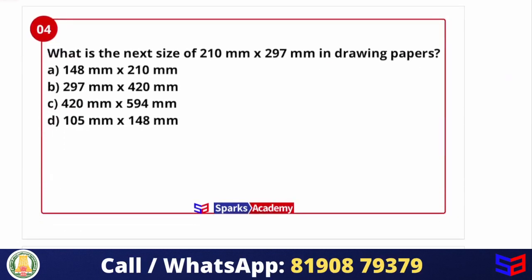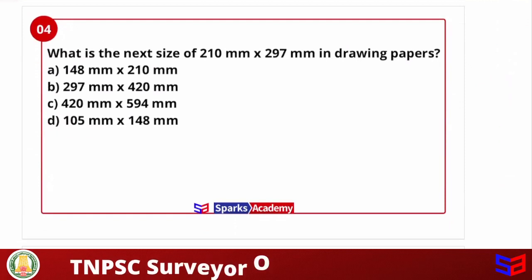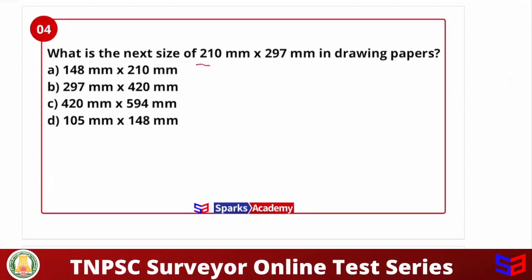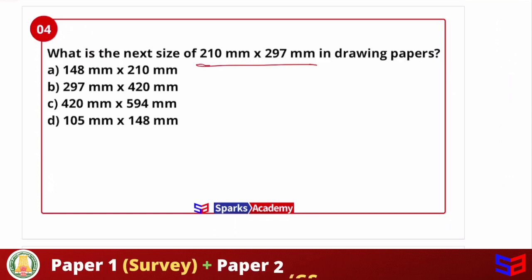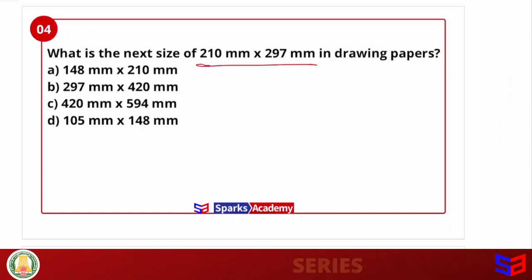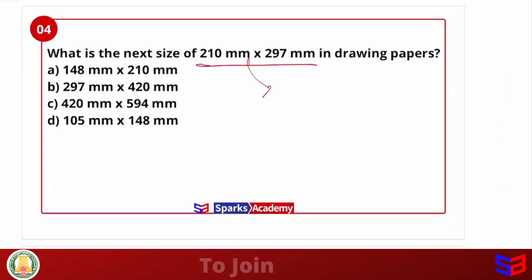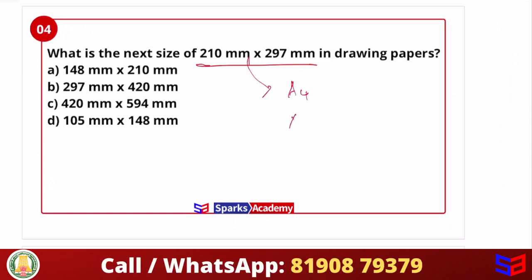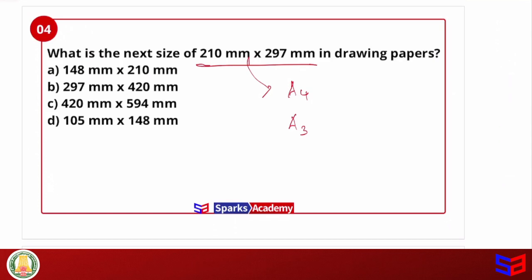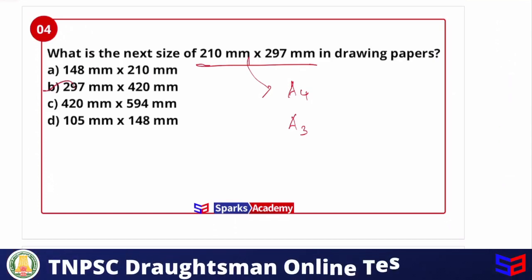Next question: what is the next size of 210 mm × 297 mm in drawing papers? The size 210 mm × 297 mm is A4. The next size up is A3, which has dimensions 297 × 420 mm.